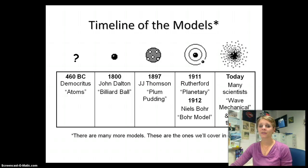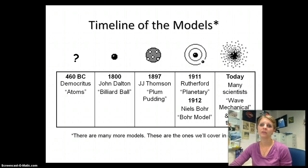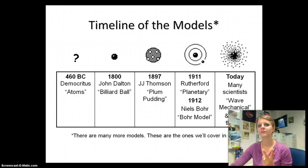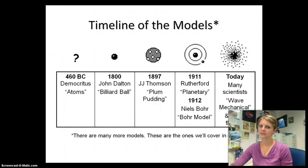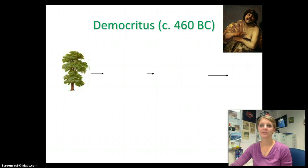These are a bunch of the guys we're going to be talking about in atomic theory. We're covering two guys today: Democritus first and then Dalton. So those are the two to focus on — Democritus and Dalton, both with Ds. We're going to go through all of them, so let's start with Democritus.